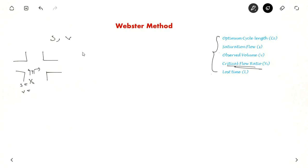So critical flow ratio. This is a very important term. YI represent each phase. So there are four phases here. So YI equal to VI divided by SI. So it is volume by saturation flow. This ratio is called critical flow ratio. So for four phases there will be four critical ratios. Y1, Y2, Y3 and Y4. Like Y2 is V2 by S2, Y3 is V3 by S3 and so on.